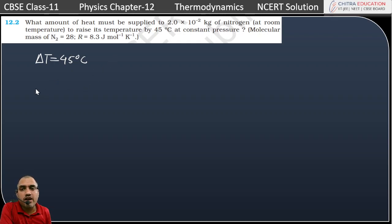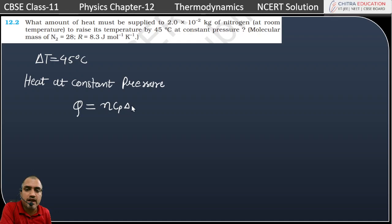If we talk about the amount of heat required at constant pressure, heat at constant pressure, that is Q = nCpΔT. And this is a diatomic gas.